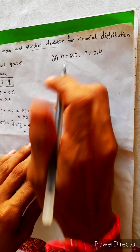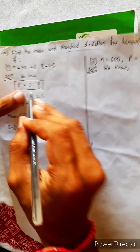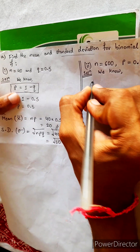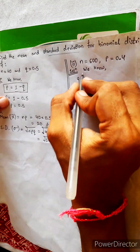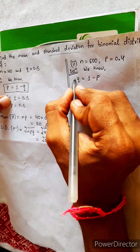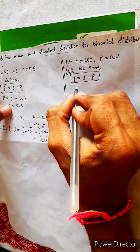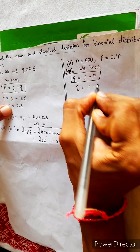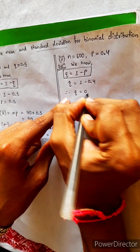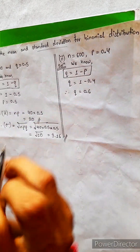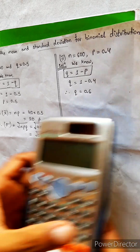Let's find this also, in the same question. For this also, we know the same formula: P equals to 1 minus Q, so Q equals to 1 minus P. Q equals to 1 minus 0.4, therefore Q equals to 0.6.